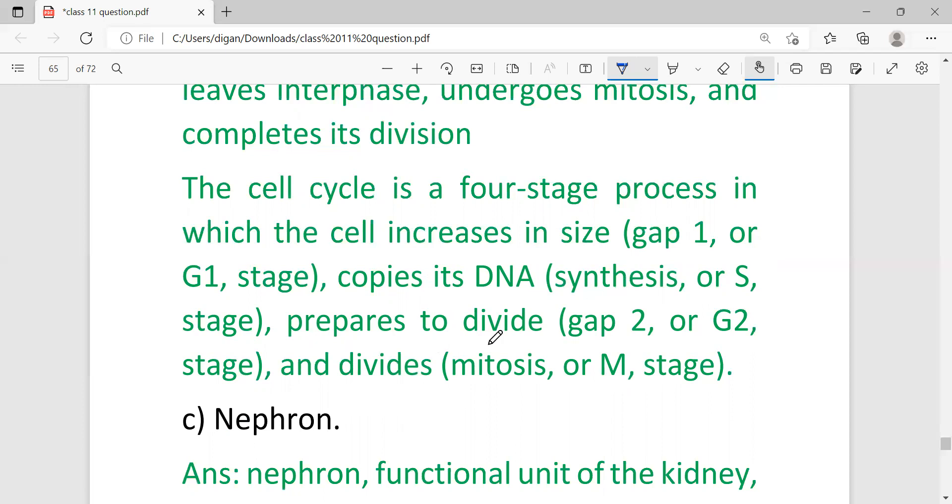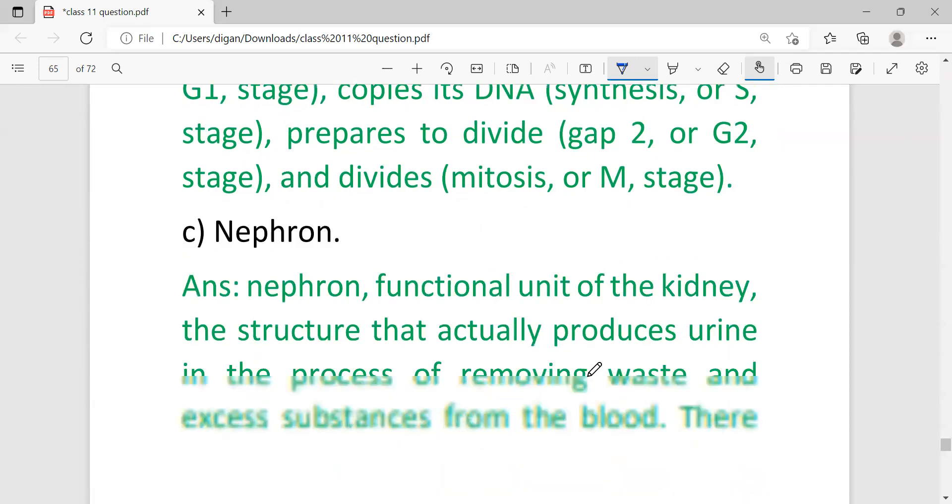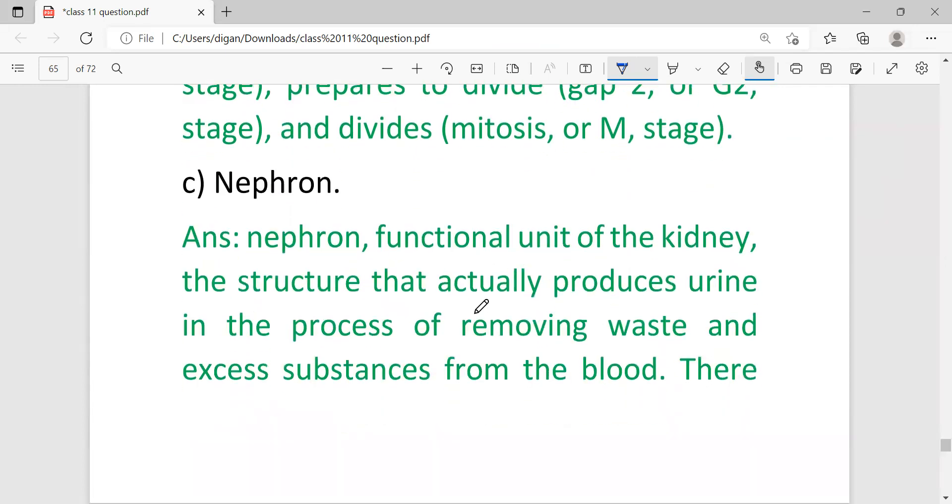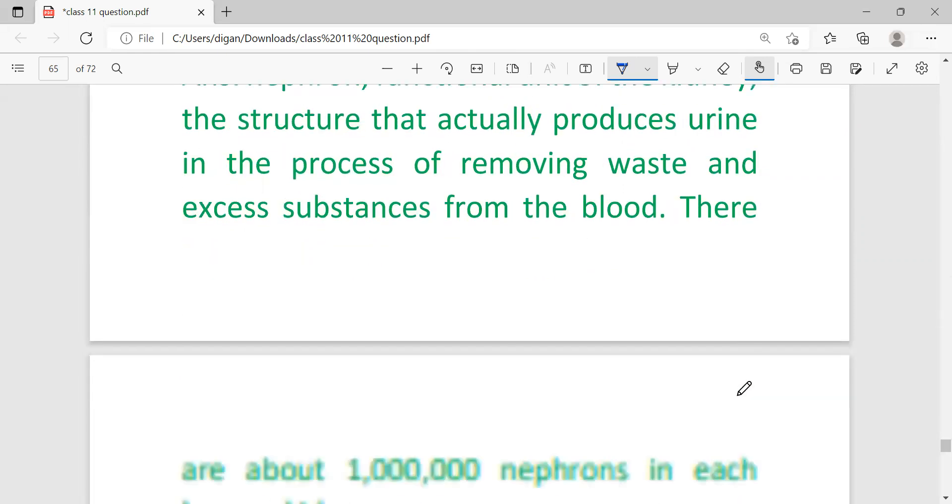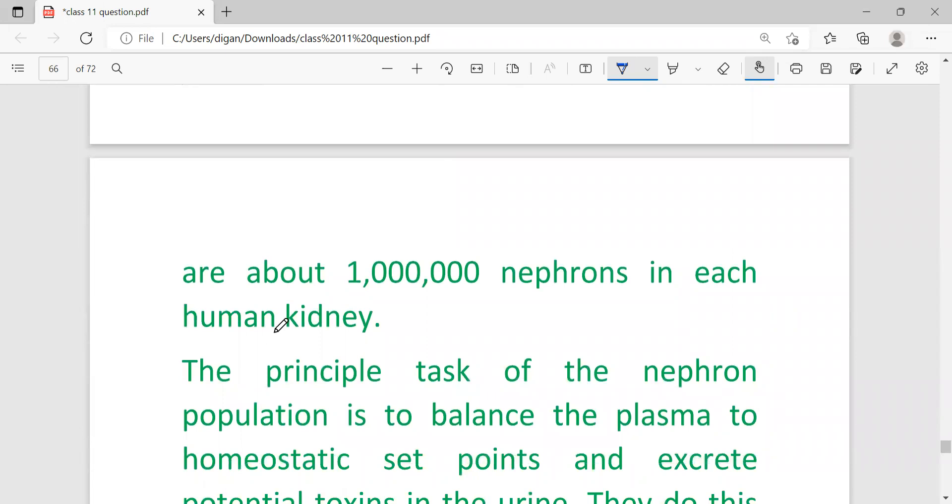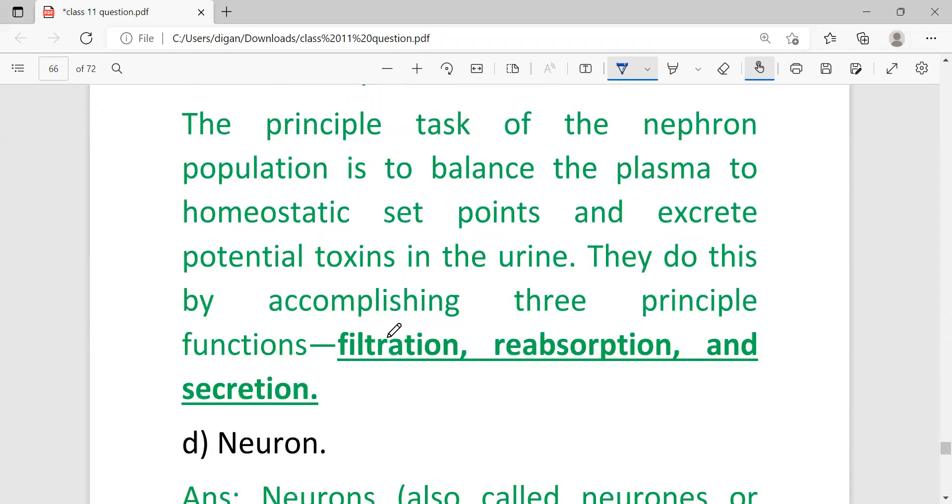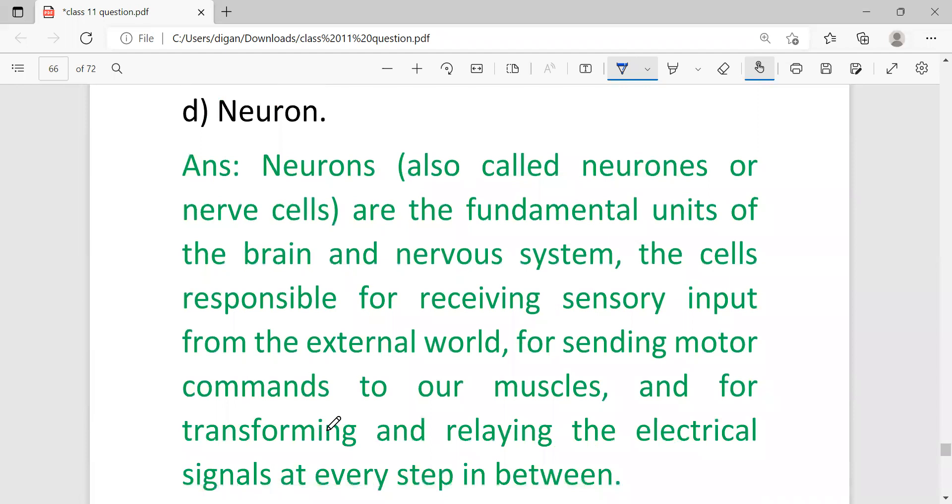Nephron. Nephron is the functional unit of the kidney, the structure that actually produces urine in the process of removing waste and excess substances from the blood. There are about one million nephrons in each human kidney. The principal task of the nephron is to balance the plasma to homeostatic set point and excrete potential toxins in the urine. They do this by accomplishing three principal functions: filtration, reabsorption, and secretion.